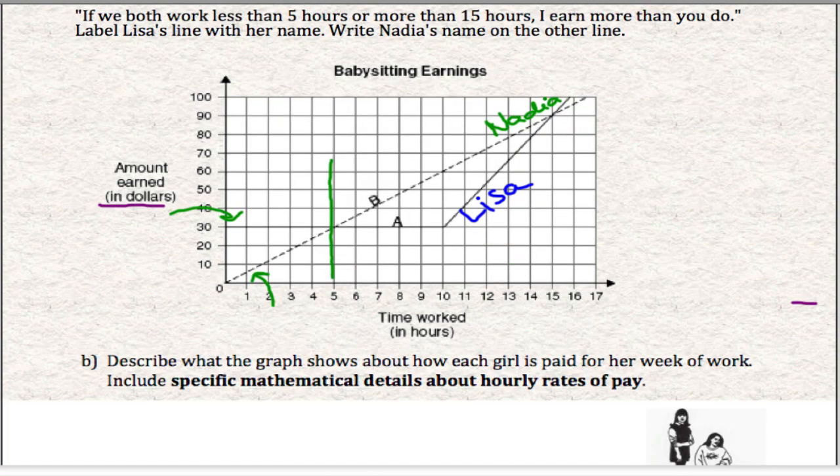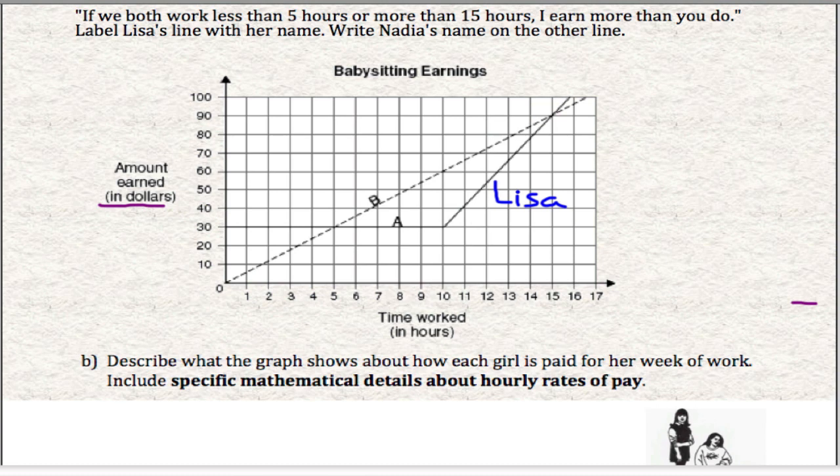The next part of this, describe what the graph shows about how each girl is paid for her week of work. So these girls are babysitting and they are charging in very different ways. If we look at Lisa first, there is a solid line that comes across from 30 and it goes straight across to there, right up to 10. And that's 10 hours.